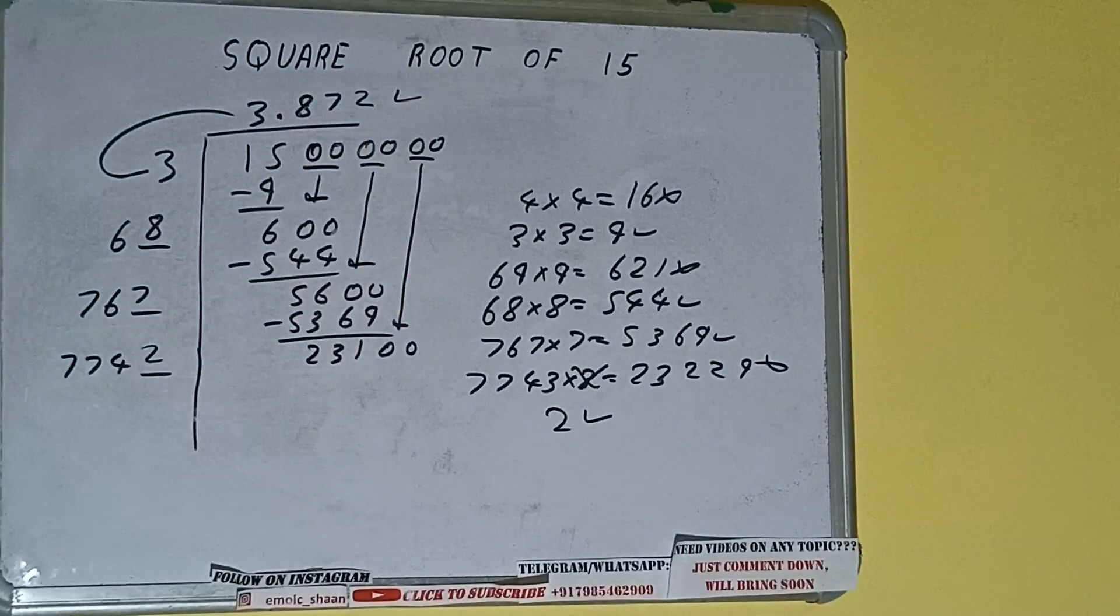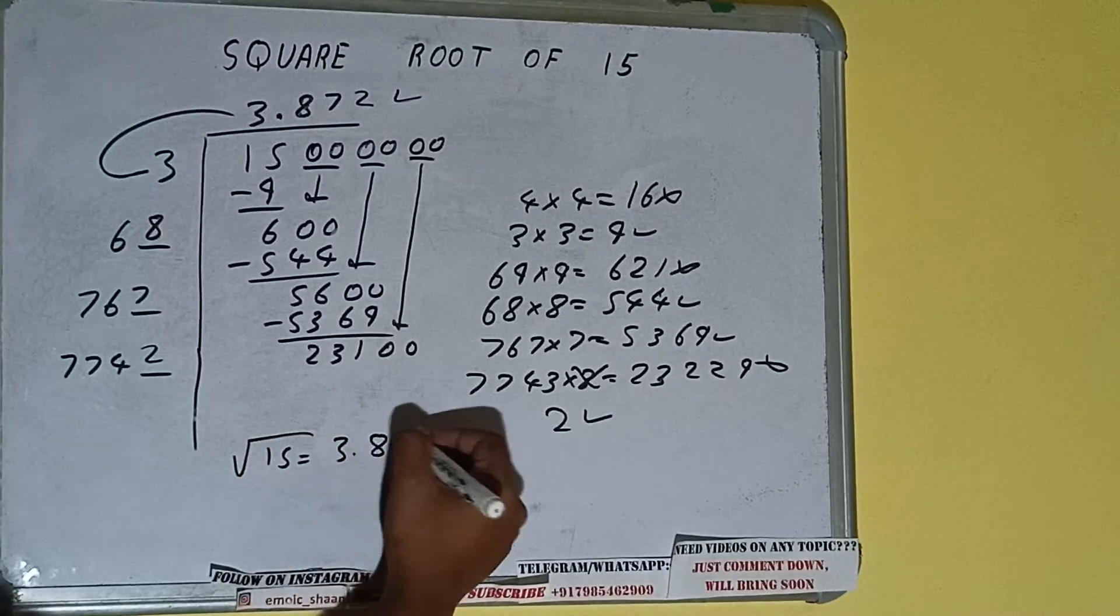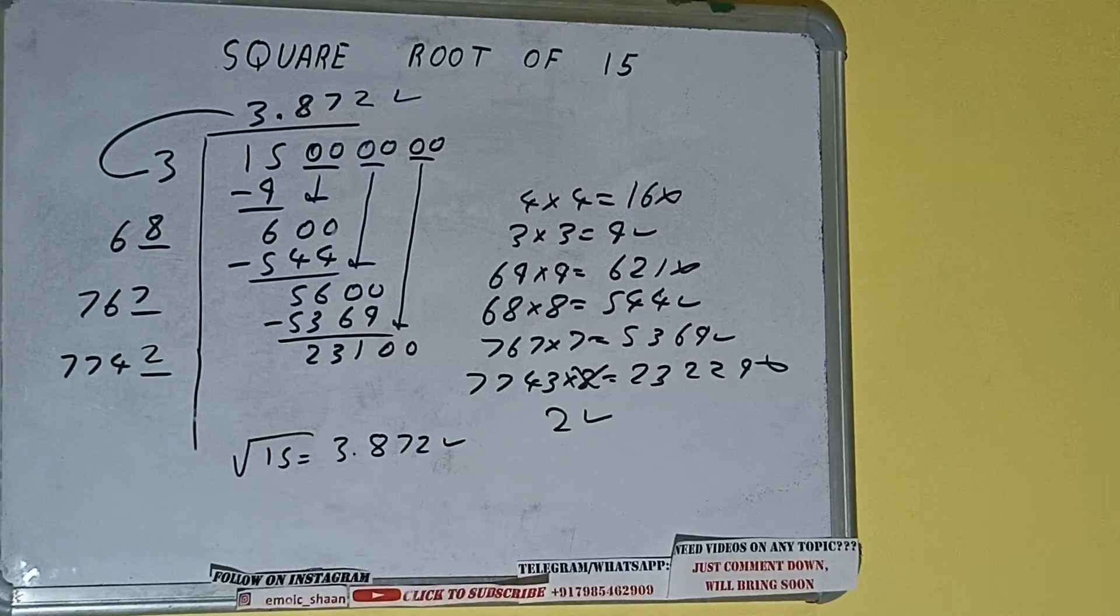So we can write 2 here and 2 here, but we don't need to calculate further because we got the answer correct up to 3 decimal places. So square root of 15 will be 3.872. That will be the answer.